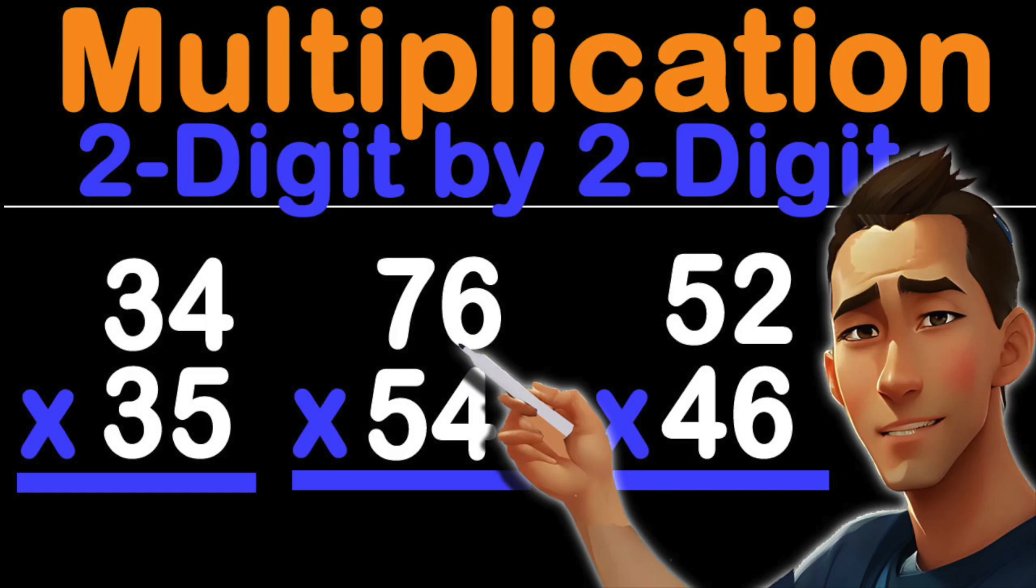In this video, I'll be showing you how to multiply two-digit numbers by two-digit numbers. Here is an example: 34 times 26.